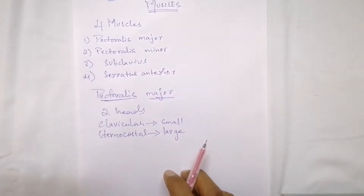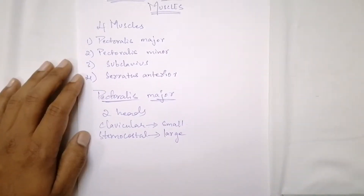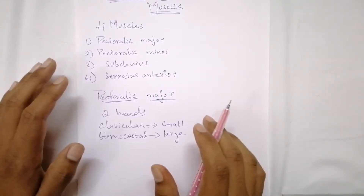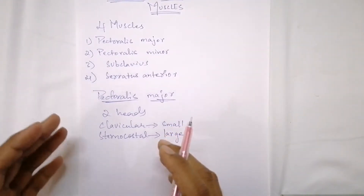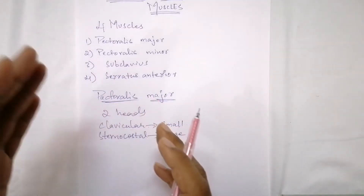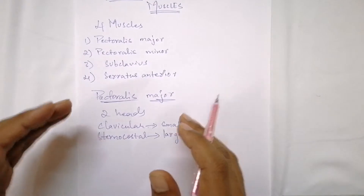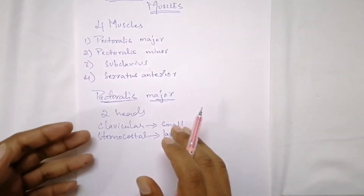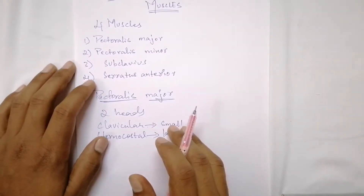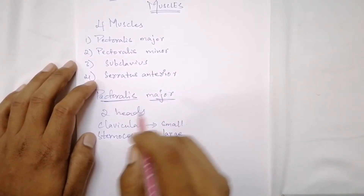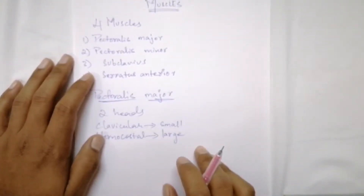The adjacent deltoid muscle and the upper border of the pectoralis major, along with the clavicle, form a triangular groove called the deltopectoral groove or clavipectoral triangle. This groove is formed mainly by the deltoid muscle, pectoralis major, and the clavicle.